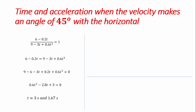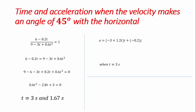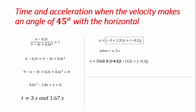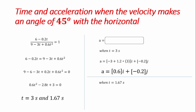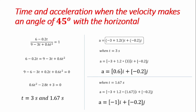We're also told to find the acceleration at each of these times. Starting with t = 3 seconds, we substitute into our acceleration equation to get the acceleration at that instant. Similarly, for t = 1.67 seconds, we substitute into the acceleration equation to get a second acceleration value. We therefore have two values of acceleration, corresponding to the two times at which the velocity makes 45 degrees with the horizontal axis.